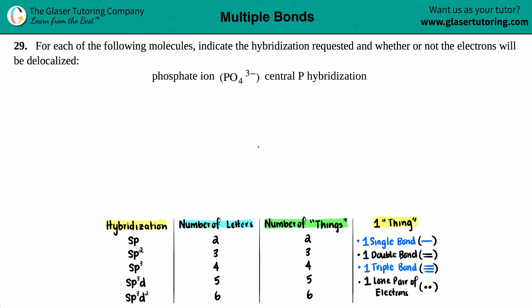Number 29. For each of the following molecules, indicate the hybridization requested and whether or not the electrons will be delocalized. And then we have the phosphate ion, which is PO4 3 minus, and we want to find the central phosphorus hybridization.